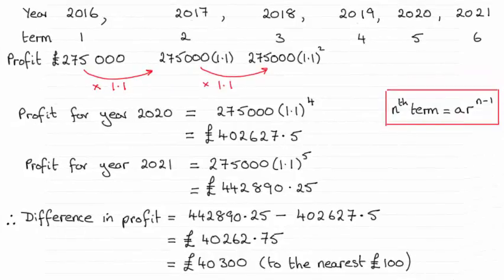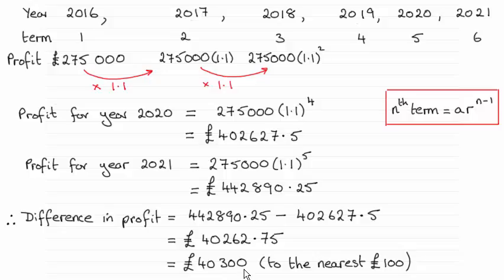Hi there. Now as you can see, we were asked to show that the difference between the expected profit for the company between 2021 and 2020 was £40,300 to the nearest £100.